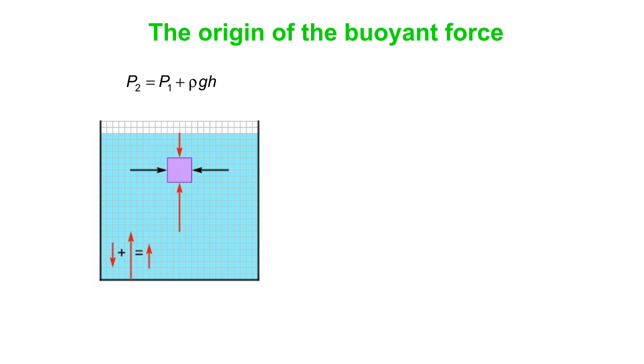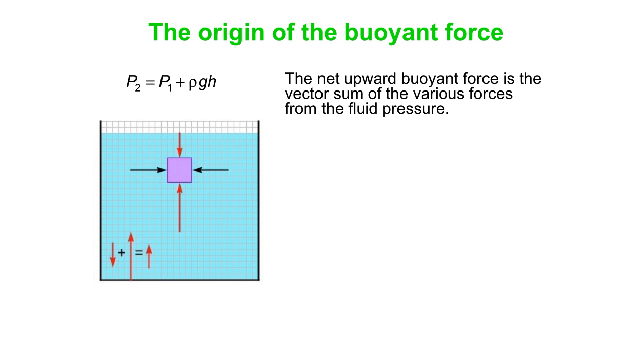So let's talk about the origin of the buoyant force. So remember we've got this equation, P2 is P1 plus rho gh. And what we've got here is a cube that's immersed in a fluid, and we're showing the pressure times area forces on the top and the bottom of the fluid, and the left and the right sides of the fluid. They're also equal and opposite arrows on the front and the back, which are not shown, but are definitely there. And this is where the buoyant force comes from. The buoyant force is the vector sum of these various pressure times area forces.